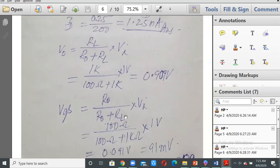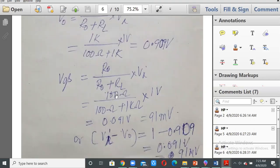VGS will be R naught by R naught plus RL into Vi, that is 100 ohms divided by 1 kilohm plus 100 ohms, equal to 1 volt. That will turn out to be 0.1k by 1.1k, which will be 0.091 or 91 millivolts.